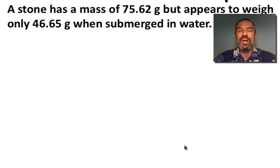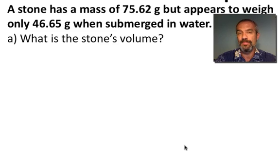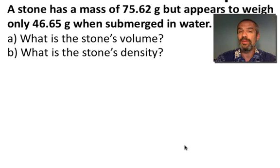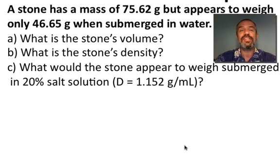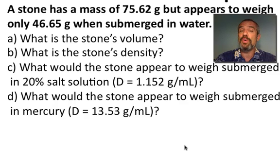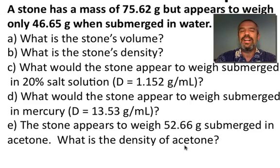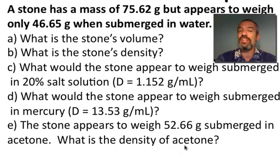Word problems such as this: A stone has a mass of 75.62 grams but appears to weigh only 46.65 grams when submerged in water. A, what is the stone's volume? B, what is the stone's density? C, what would the stone appear to weigh submerged in 20% salt solution with a density of 1.152 grams per milliliter? D, what would the stone appear to weigh submerged in mercury with a density of 13.53 grams per milliliter? And E, the stone appears to weigh 52.66 grams submerged in acetone — what is the density of the acetone?